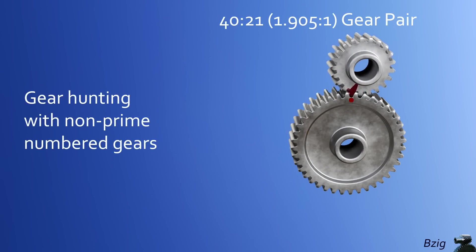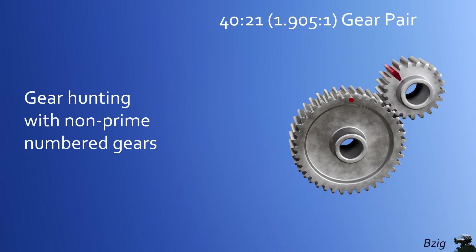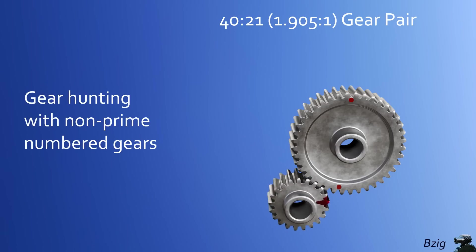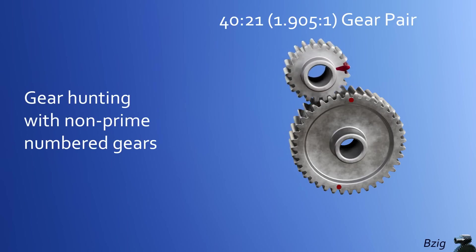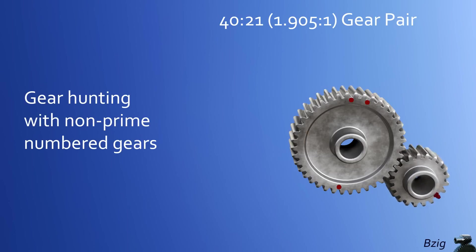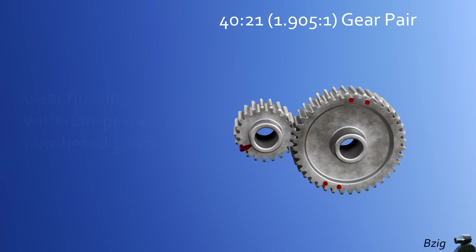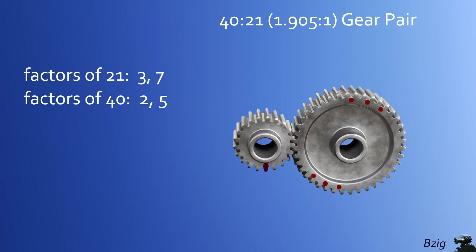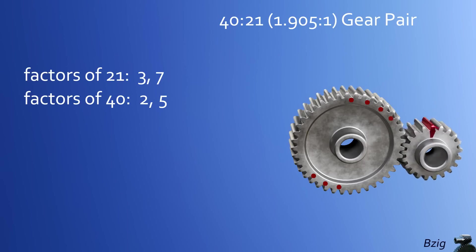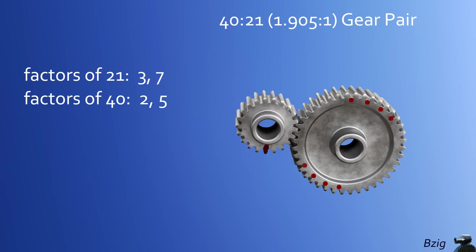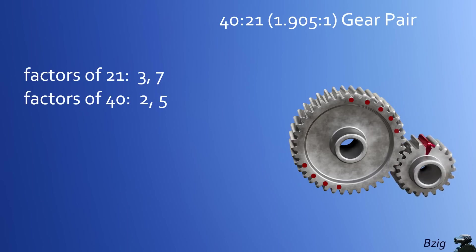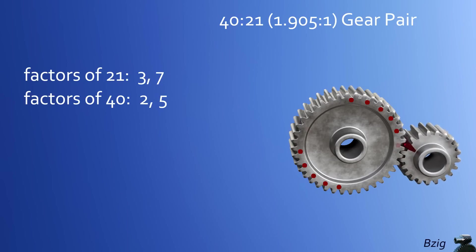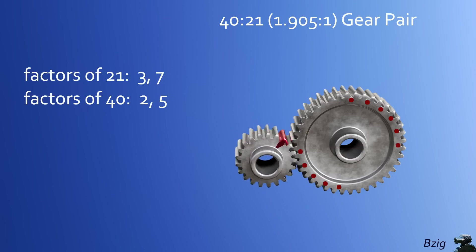Next, we'll swap the 19-tooth prime number gear with a 21-tooth non-prime gear. This is now a 40-to-21-tooth gear pair. Neither 40 nor 21 is a prime number. This is now a 40-to-21 gear reduction, or a 1.905-to-1 gear reduction. The factors of 21 are 3 and 7, and the factors of 40 are 2 and 5. Since they have no common factors, this results in a hunting-tooth gear pair. With the gears in motion, we see the red tooth on the 21-tooth gear meshes on the 40-tooth gear after 21, 42, 63, and all of the other multiples of 21 until it contacts every tooth on the 40-tooth gear and then repeats this cycle.